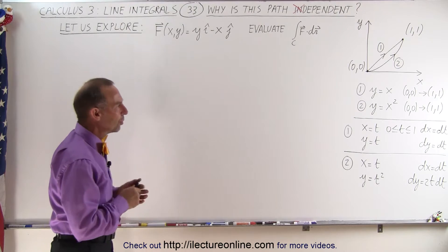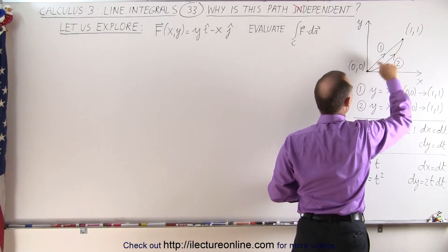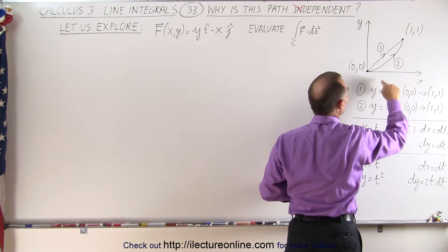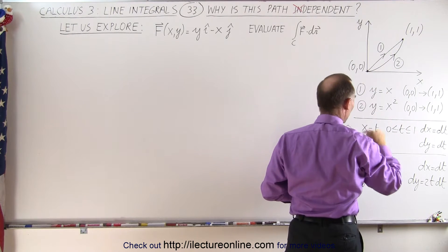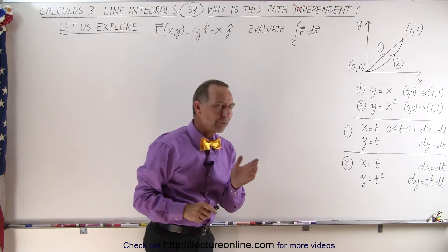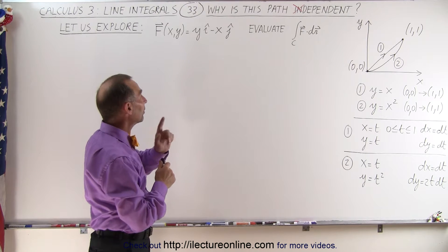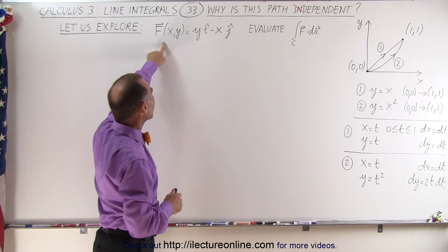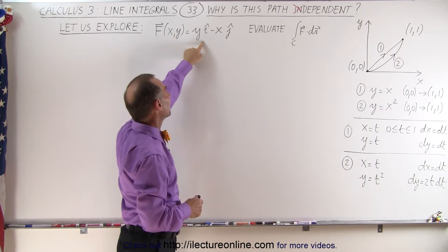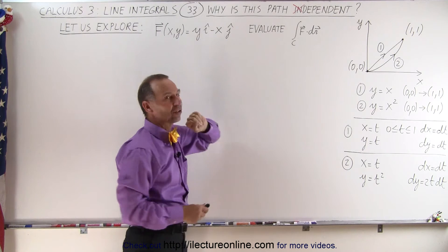What has changed? Well, we went back to going from (0,0) to (1,1) along a linear path y equals x and a parabolic path y equals x squared. And so remember a couple videos ago it was path independent, but the difference is that our vector field is yi minus xj instead of yi plus xj.